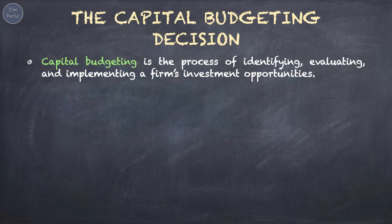Capital budgeting is the process of identifying, evaluating, and implementing a firm's investment opportunities. Let's say you have $1 million and three potential investments are being presented to you — the process of deciding which project to invest in is what we call capital budgeting. Capital budgeting has a few indicators such as payback period, NPV, and IRR. These are to assist us to select the best investment for the company.